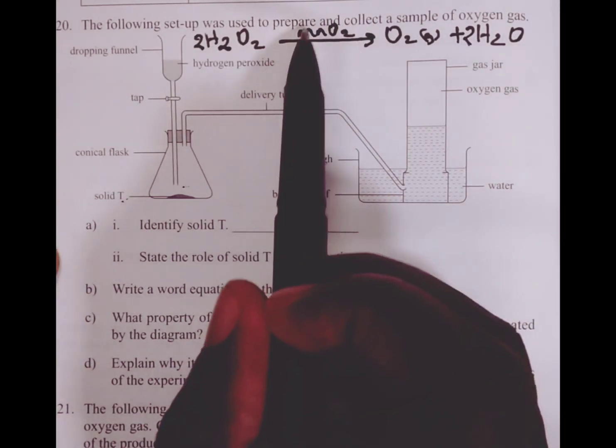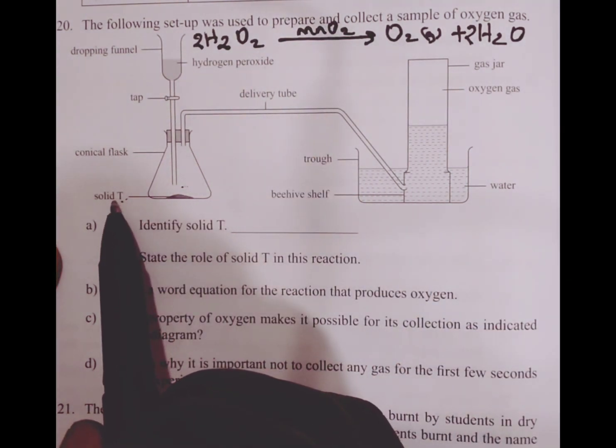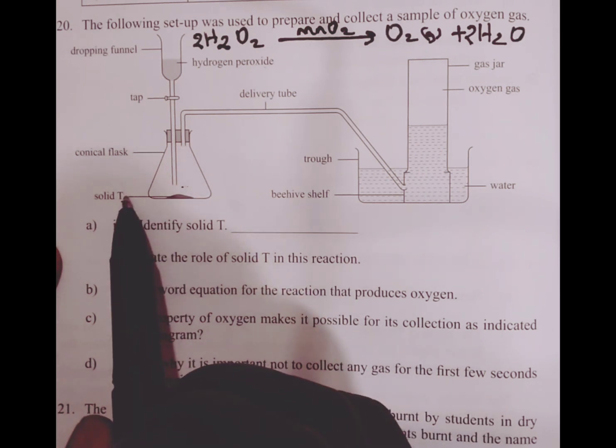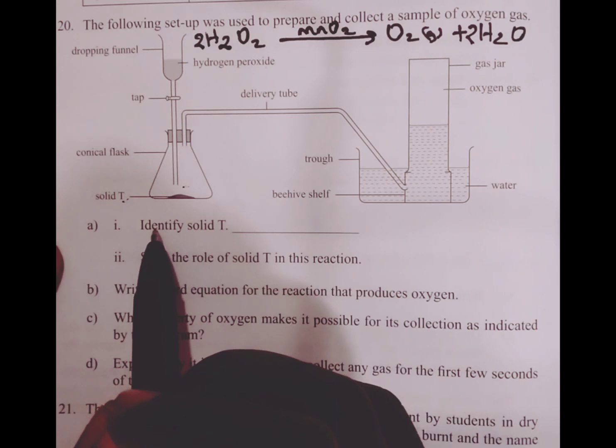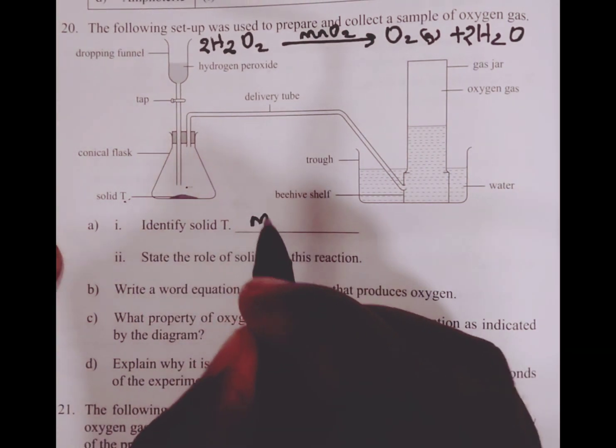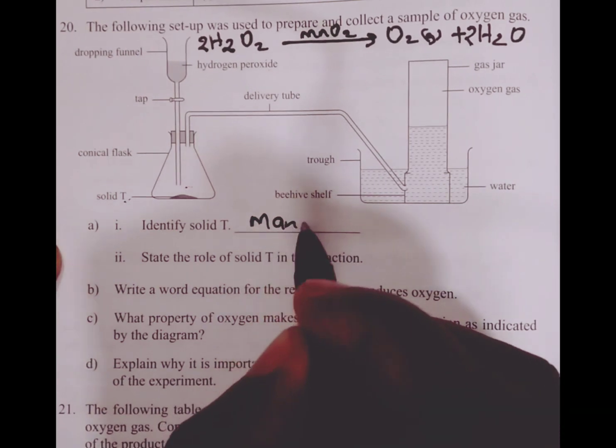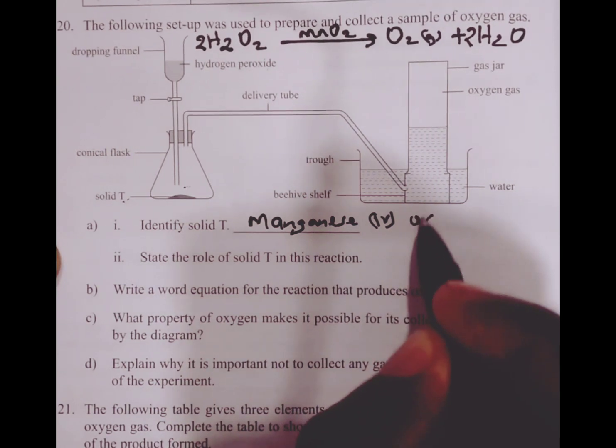Manganese(IV) oxide in this case is used as a catalyst and therefore we have solid T, which is manganese(IV) oxide. So the first part of the question, identify solid T, and solid T is manganese(IV) oxide.